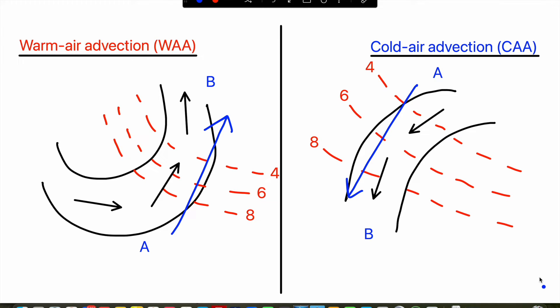Low level warm air advection tends to make the environment more unstable for convective development, and it also contributes to rising motion that can prime the environment for convective initiation or, in rarer cases, initiate storms on its own. Generally these storms forced solely by warm air advection are elevated north of frontal boundaries, but in certain cases low level warm advection can initiate surface-based convection in the open warm sector in severe weather environments.